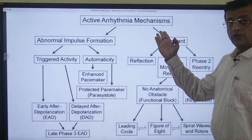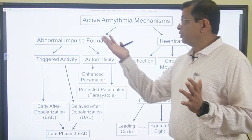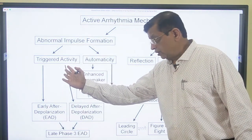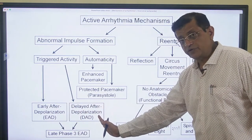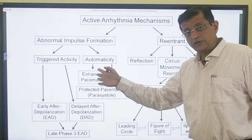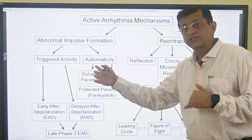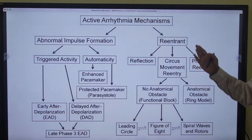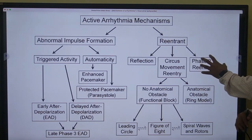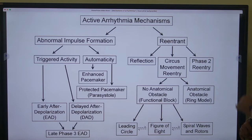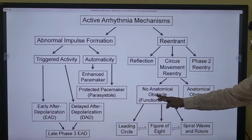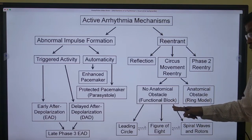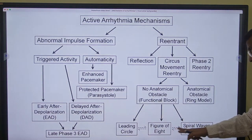Combining the last three lectures on active arrhythmia mechanisms: they could be due to abnormal impulse formation or re-entry mechanism. Abnormal impulse formation could be triggered activity - either early after-depolarization or delayed after-depolarization. Automaticity could be enhanced phase 4, enhanced abnormal automaticity, or enhanced normal automaticity, or a protected phase 4 like parasystole. Re-entry could be reflection, phase 2 re-entry - which is especially seen in Brugada syndrome - or circus movement re-entry, which can have an anatomical obstacle or no anatomical obstacle. Functional block types include leading circle, figure-of-eight, or spiral waves.